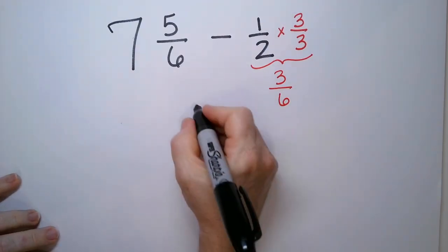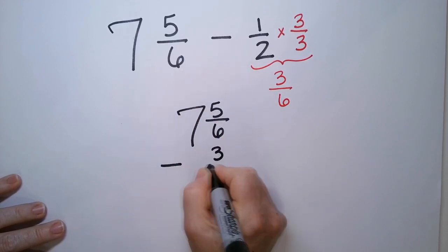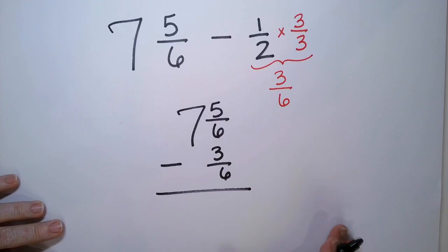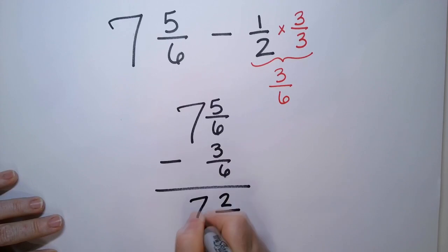So this now becomes three six. So let's rewrite the problem. Seven and five six minus three six. Denominators match. So I go five minus three is two six and we drop the seven.